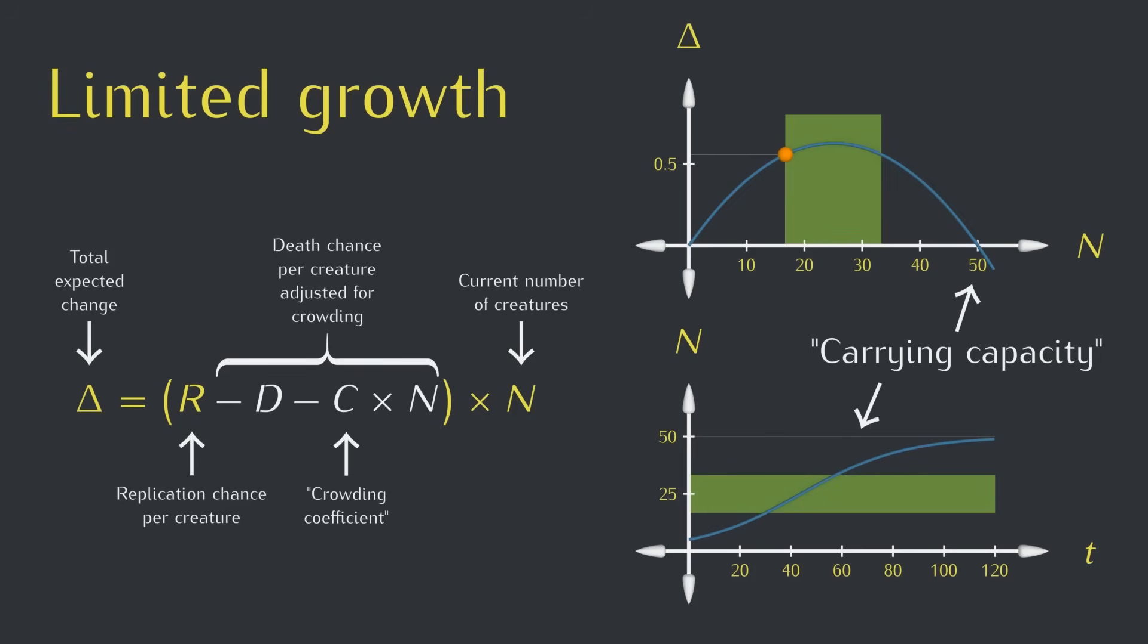In this middle region, the delta curve is near its maximum, and it's mostly horizontal, so the overall expected growth rate doesn't change much. The growth rate is still high, but it's just not speeding up anymore.